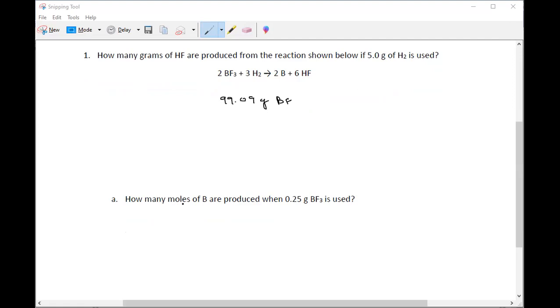So it's asking us how many moles of B are produced when 0.25 grams of BF3 is used? You'll look at the original chemical reaction from the previous problem, and you'll recognize we're talking about two guys here. Player number one is B, which is product, and player number two is BF3, which is a reactant.